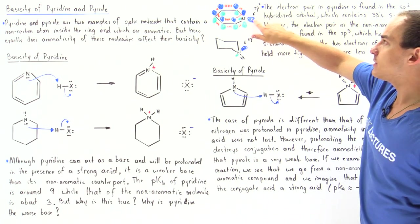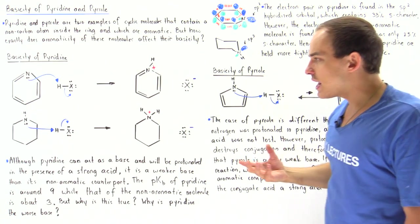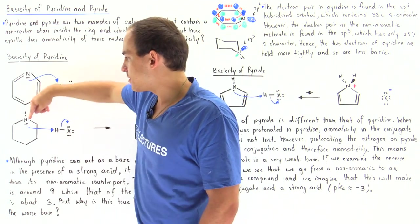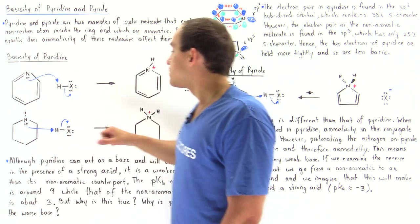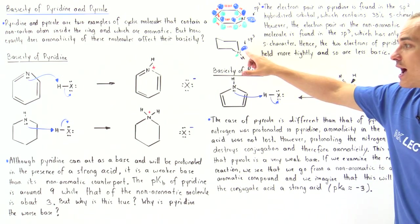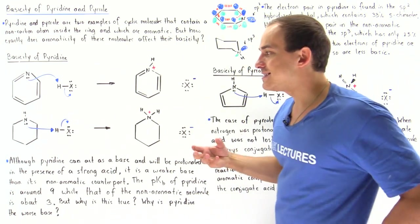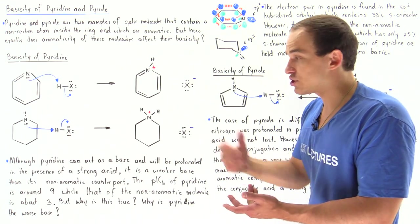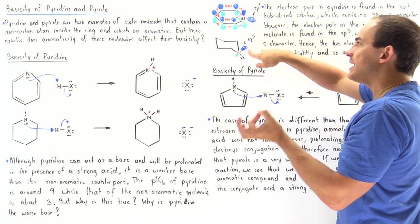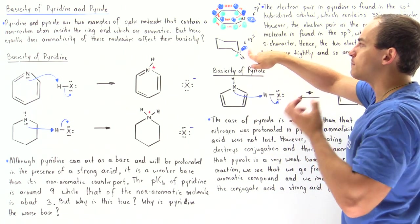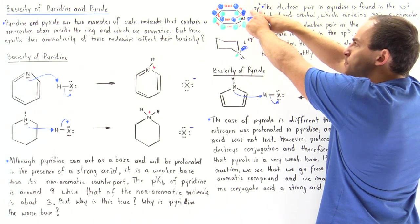This lone pair of electrons is found in the sp2 orbital. On the other hand, if we examine the hybridization of the nitrogen in the non-aromatic counterpart, it is sp3 hybridized. So this molecule is not only non-planar and non-conjugated — it's not aromatic — but the lone pair of electrons is also found in a completely different type of orbital: sp3 here versus sp2 there.